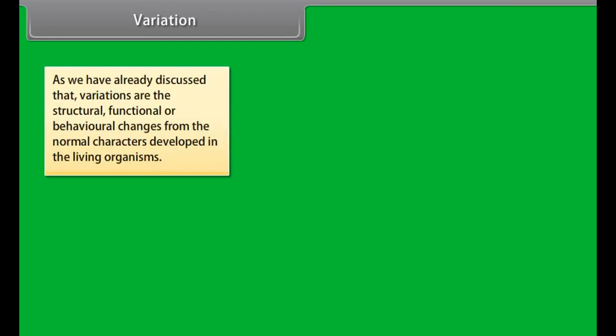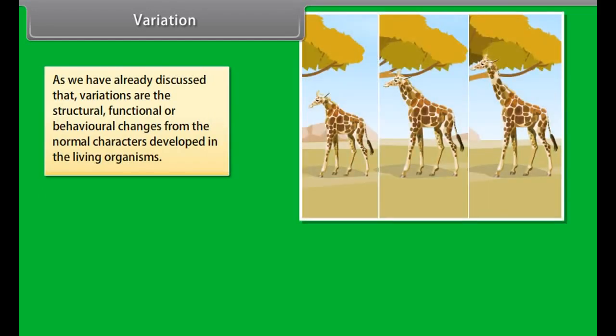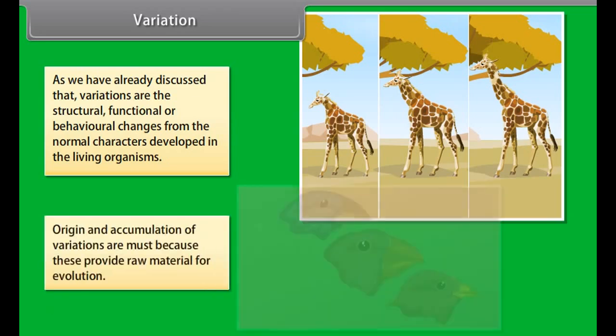Evolution is a gradual process through which the present-day animals and plants have arisen since the time life originated. Variations are the structural, functional, or behavioral changes from the normal characters developed in living organisms. The origin and accumulation of variations are essential because they provide raw material for evolution.